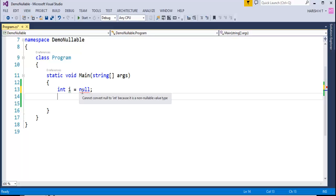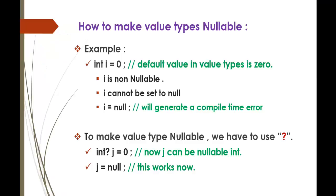So it cannot store that value. If I want to make this Value Type Nullable, to make a Value Type Nullable we have to use the Question Mark operator. I place the Question Mark immediately after defining the Int. This Question Mark has a major role — it makes j a Nullable Int. Now j can hold Null, and assigning 'j = null' works perfectly.